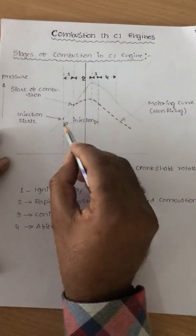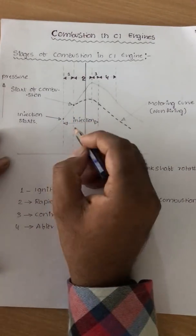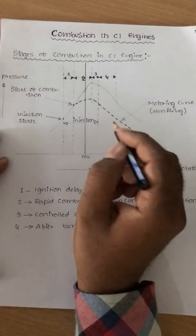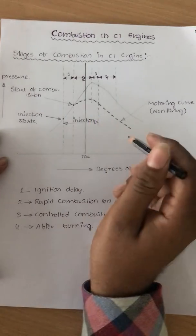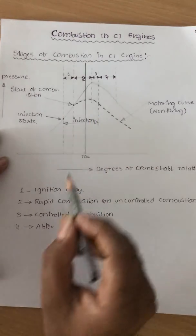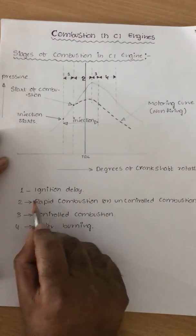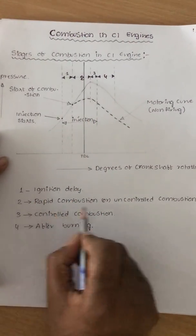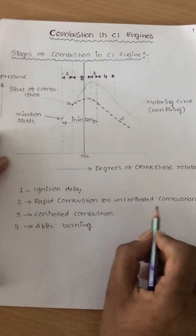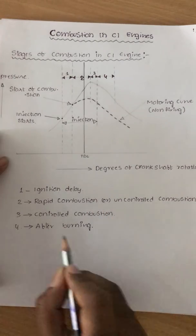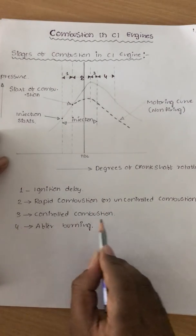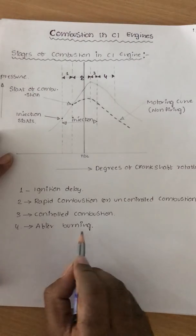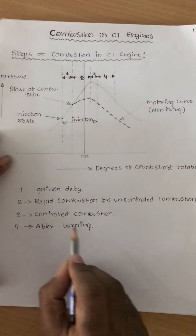The typical combustion in a CI engine is broadly classified into four stages. The first one is ignition lag, the second one is rapid combustion or uncontrolled combustion, the third one is controlled combustion, and the fourth one is after burning.